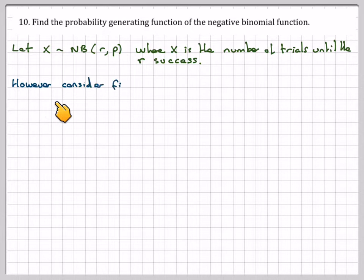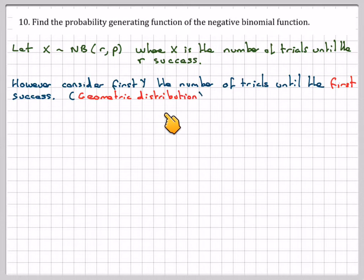However, consider first Y, the number of trials until the first success. This is a geometric distribution. So the probability that Y equals y will be q to the y minus 1 times p.